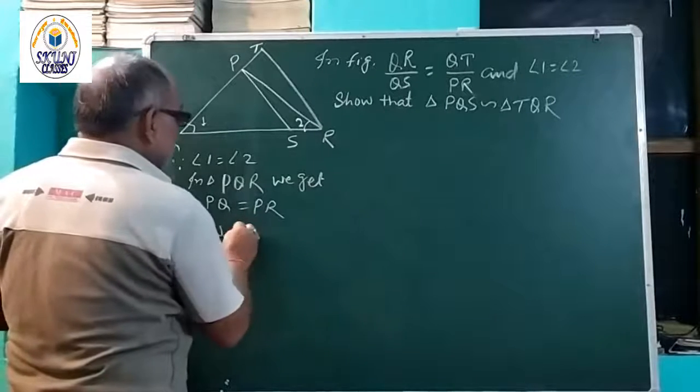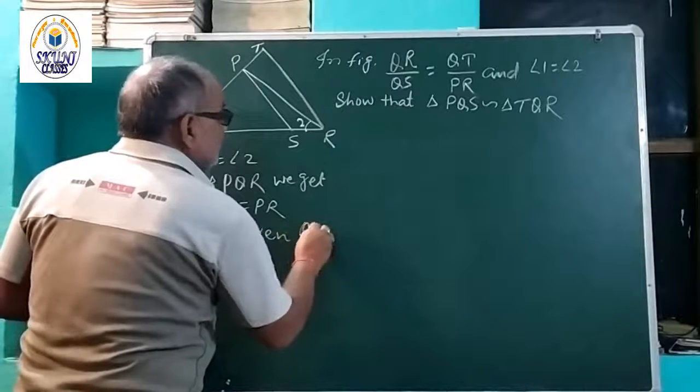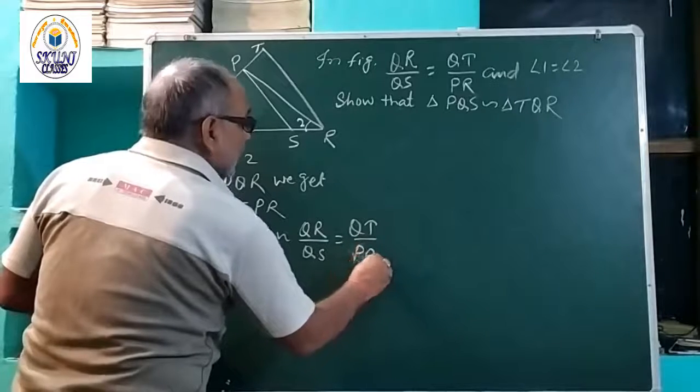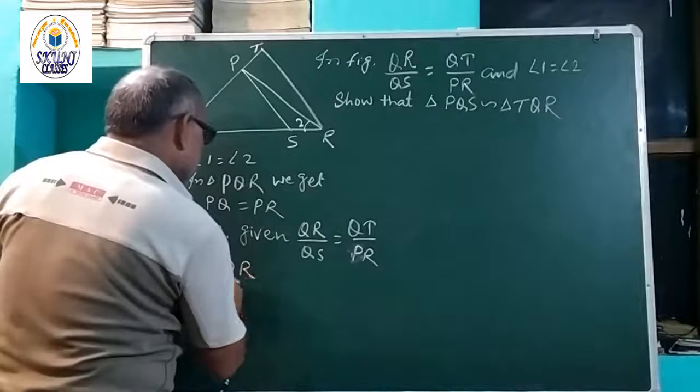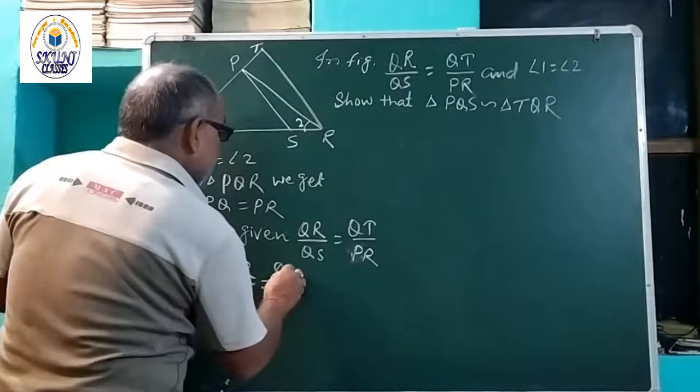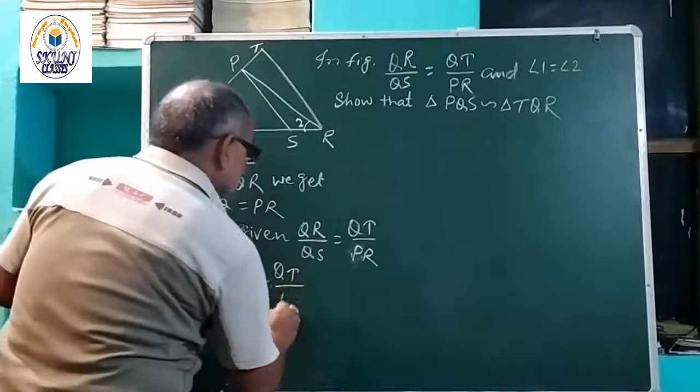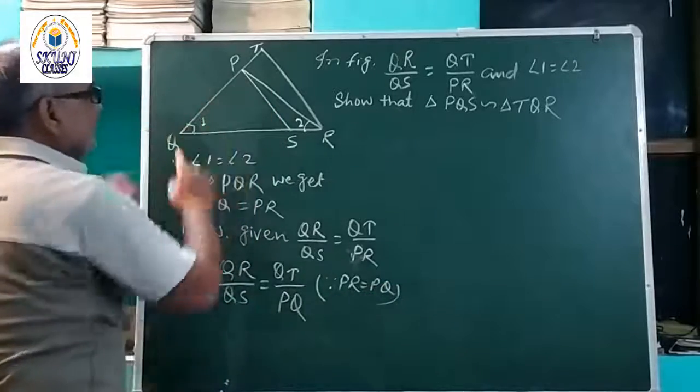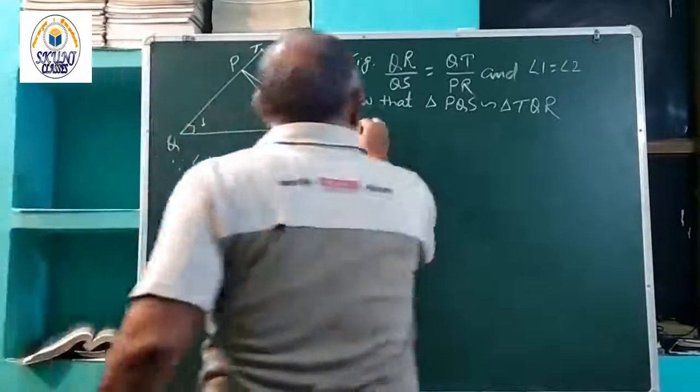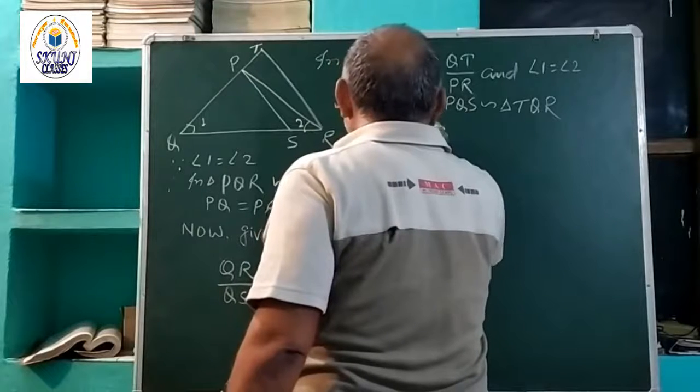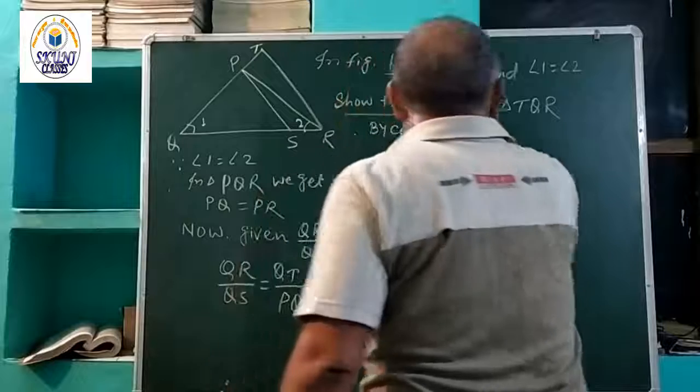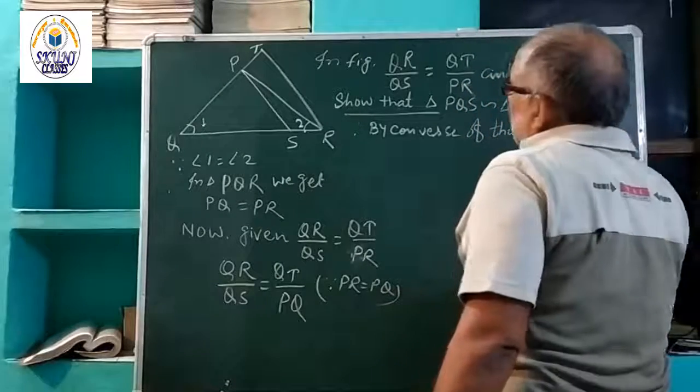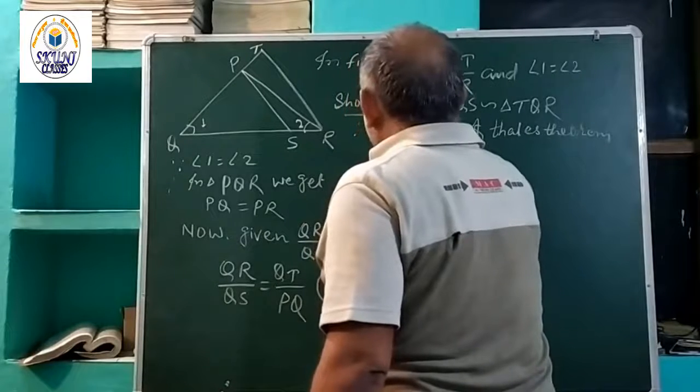Now, given QR by QS is equal to QT by PR. Since PQ is equal to PR, when this criteria comes, then PS is parallel to TR. Therefore, by converse of Thales theorem, PS parallel to TR.